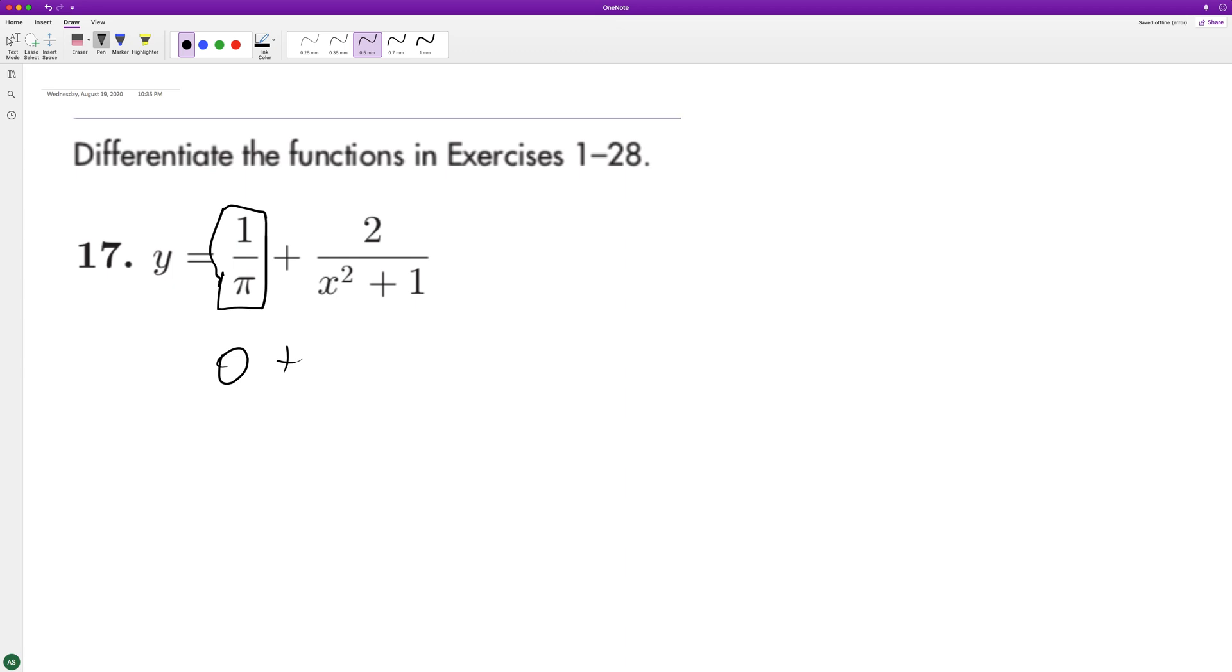There's a couple things we could do, but we'll use the quotient rule. So we'll take the derivative of the top times the bottom, minus the derivative of the bottom times the top, over the bottom squared. So we end up with the derivative of